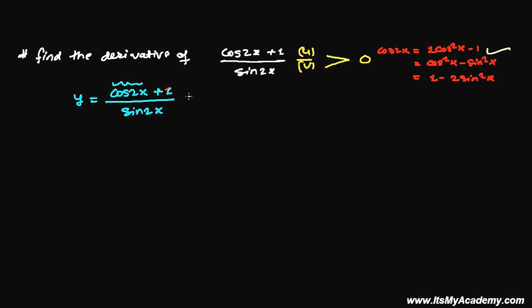So in place of cos2x, I'm going to write 2cos²x minus 1, then plus 1, divided by sin2x. What is the formula for sin2x? It is 2 times sinx times cosx.